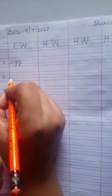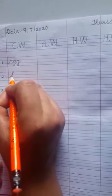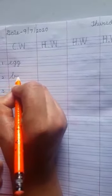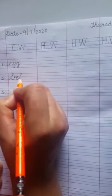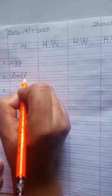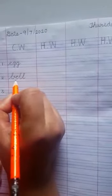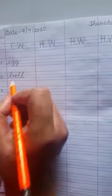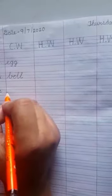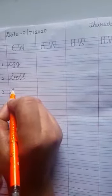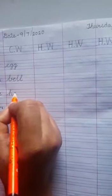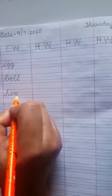Then bell B E L L or B E double L. Then number 3 hen and the spelling of hen is H E N hen.